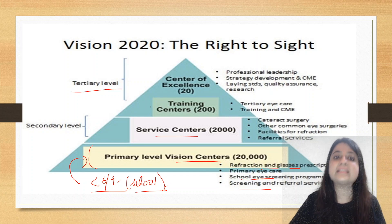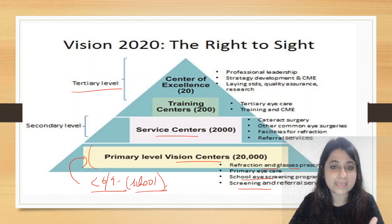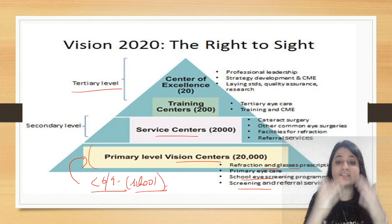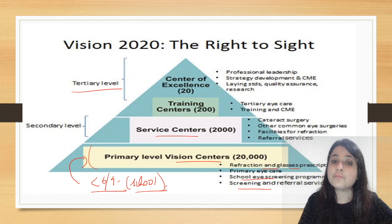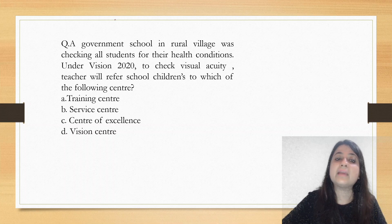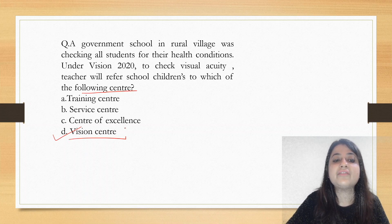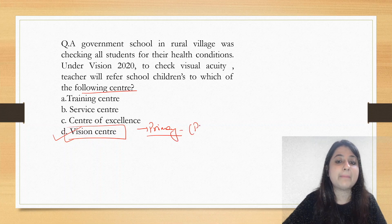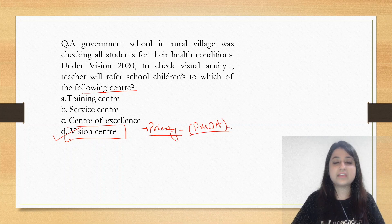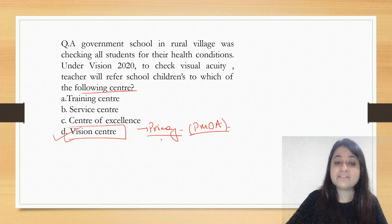Key things to remember: diseases under Vision 2020 globally and for India, the center types — Vision Centers, Service Centers, Training Centers, Centers of Excellence — their numbers, and population norms. A question example: a government school in a rural village is checking all students under Vision 2020 to check visual acuity — the teacher will refer students to the Vision Center at the PHC level, where a paramedical ophthalmic assistant screens vision.